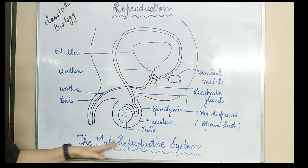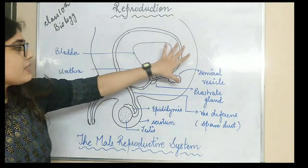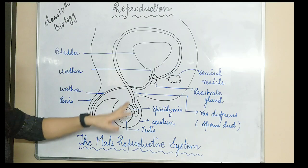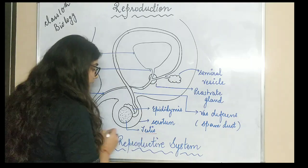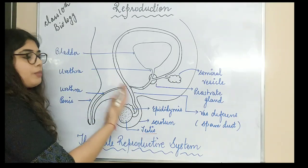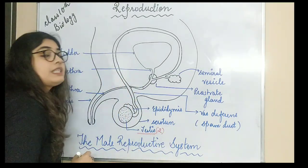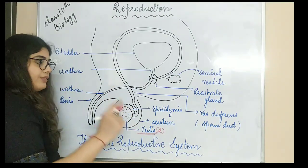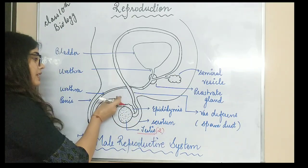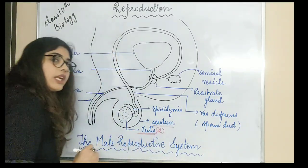Now let's get started. All of this is present inside the body, but in the case of human males, the testes are basically present outside the body. The testes are two in number — one pair of testes is present — and they are present in a sac-like structure known as the scrotum, which can also be called scrotal sacs.